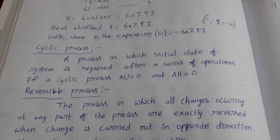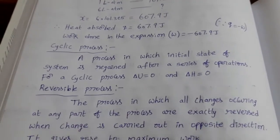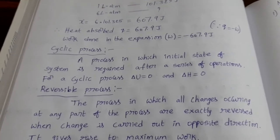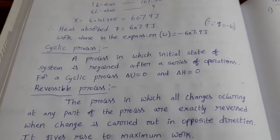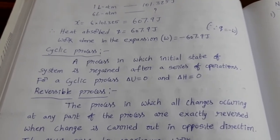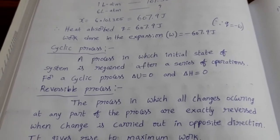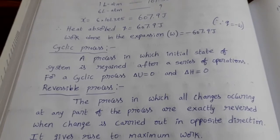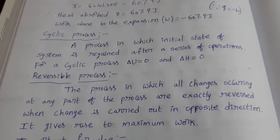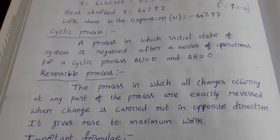Cyclic process means an initial stage changes to another, then another, and returns to the initial stage. Reversible process means by changing the reaction conditions — conducting the process in the opposite direction — we get back the original substance. That is the difference between cyclic and reversible. In a reversible process, it gives rise to maximum work.